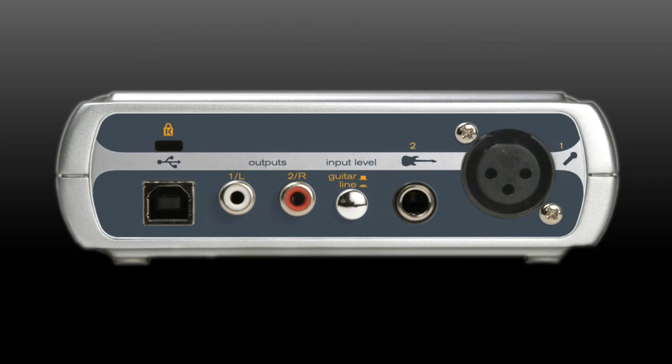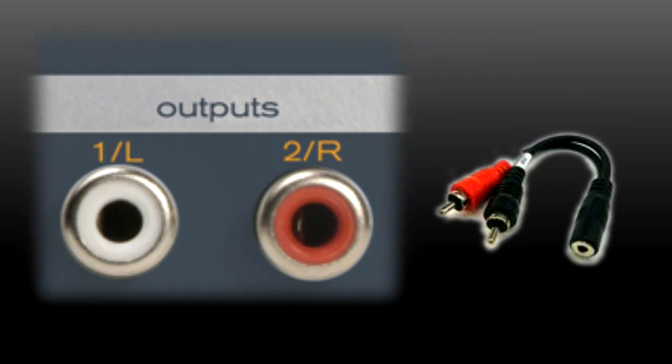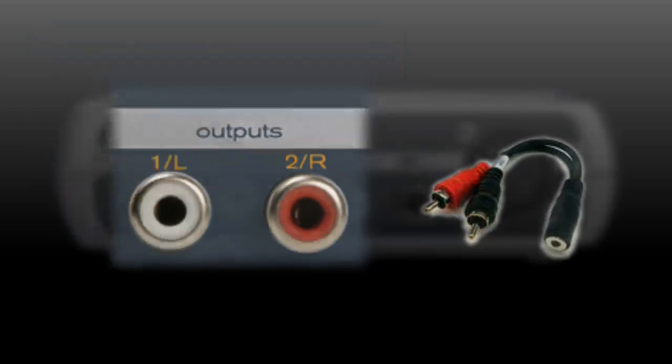Connect an amplifier or powered speakers to the red and white RCA line outputs on the back of the FastTrack. Depending on your speakers, you may need a 1⅛-inch stereo to dual RCA adapter like this. If you don't have headphones or an adapter, you can connect your computer speakers to the headphone output on the front.